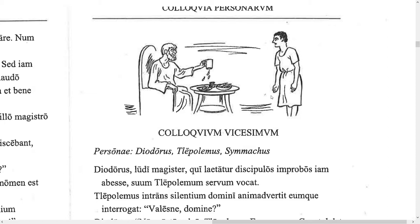Salve te omnes! Welcome to this video lesson on colloquium vicesimum, the 20th dialogue that goes along with Lingua Latina Per Se Illustrata. In the picture is Diodorus — Diodorus is the teacher. Here is a slave named Tlepolemus, the slave of Diodorus. On the table is food. The characters in the colloquium are Diodorus, Tlepolemus, and Simacus.